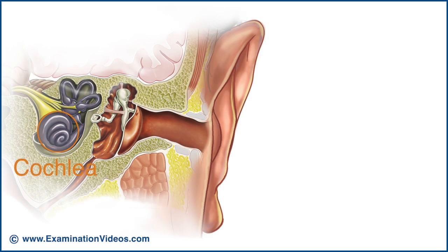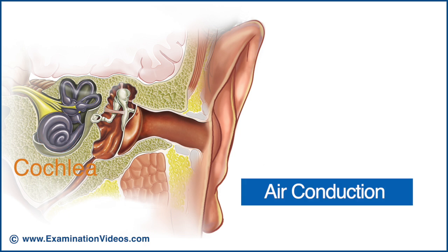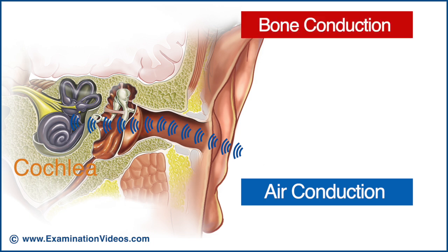Sound is delivered to the cochlea of the inner ear by two conduction pathways. In air conduction, the sound is gathered by the external ear, funneled by the external auditory canal to the tympanic membrane and onward to the inner ear via the ossicles. In bone conduction, the sound is transmitted directly through the bones of the skull to the inner ear, bypassing the air conduction pathway.